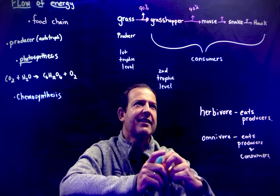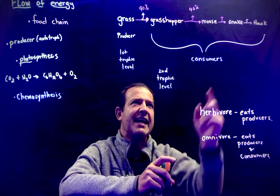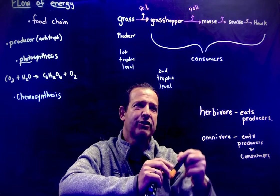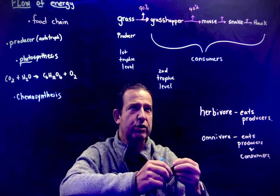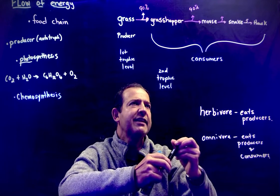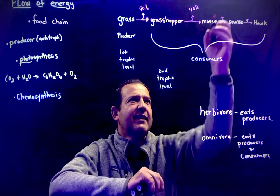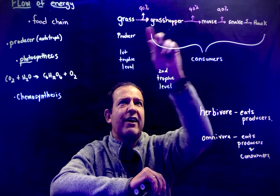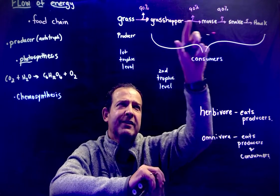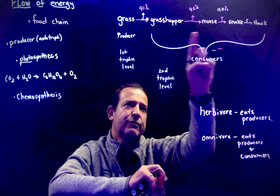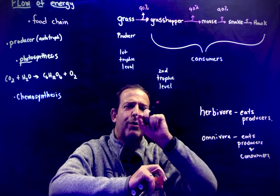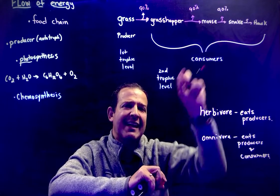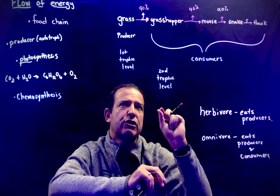The snake is going to eat the mouse, so the snake gets energy — but not all of it. Just like in the other steps, 90% of it is lost. So what's happening to the available energy as we go down this food chain? There's less available energy, because we're losing 90% at each trophic level.